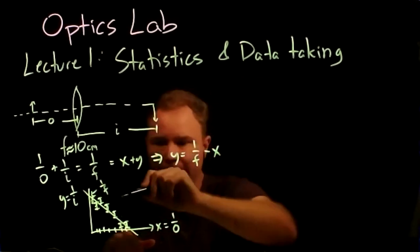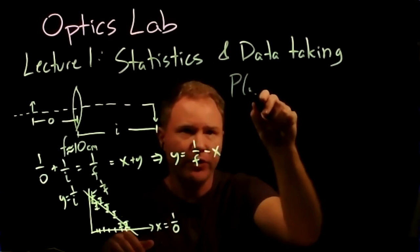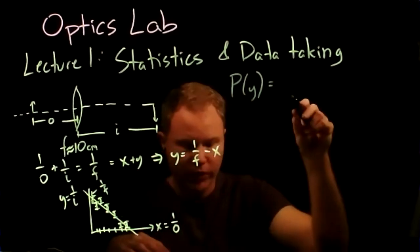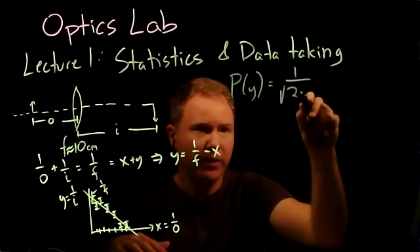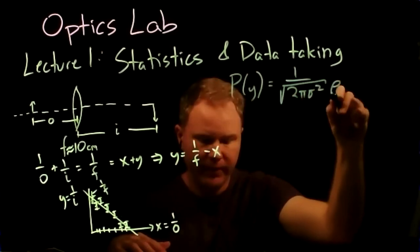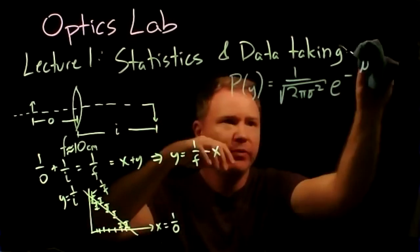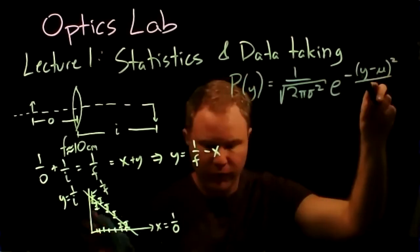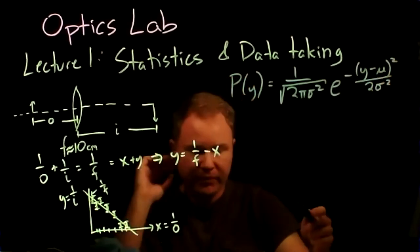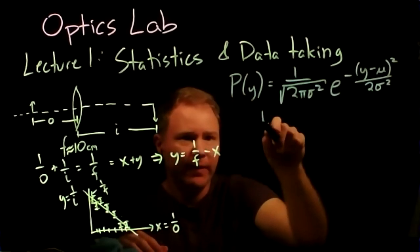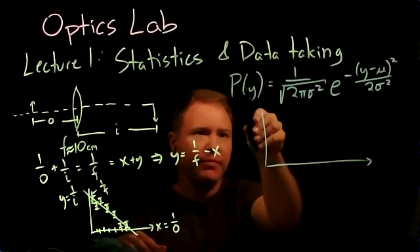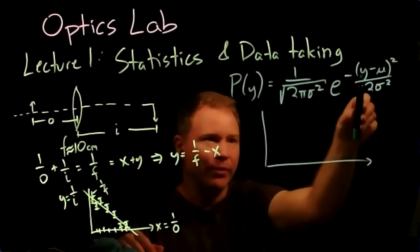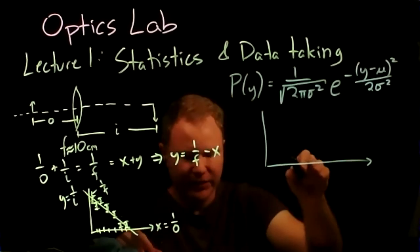The probability of measuring a particular value y is distributed according to a Gaussian distribution: P(y) = (1/√(2πσ²)) · exp(−(y − μ)² / (2σ²)). We're just talking about one data point here — the probability is really a probability density, the probability of actually measuring a y between some value and that value plus dy.